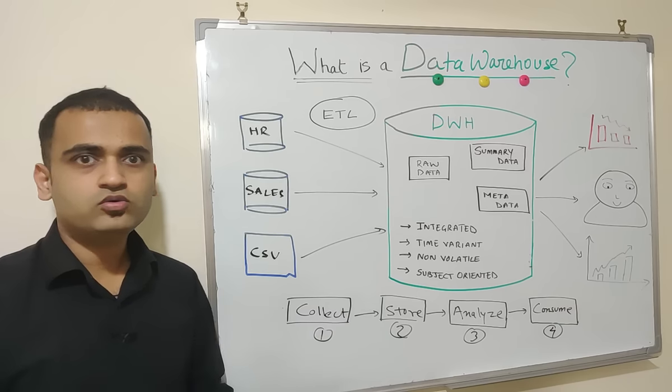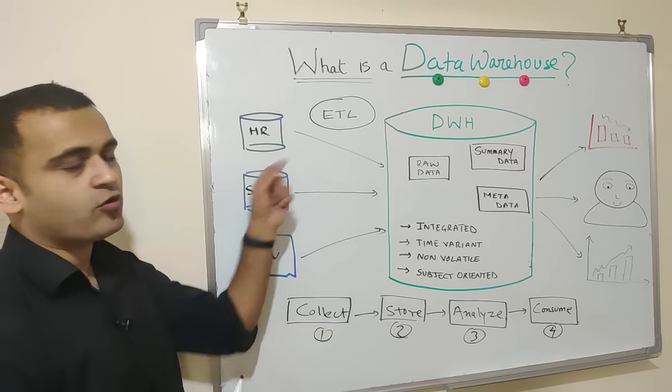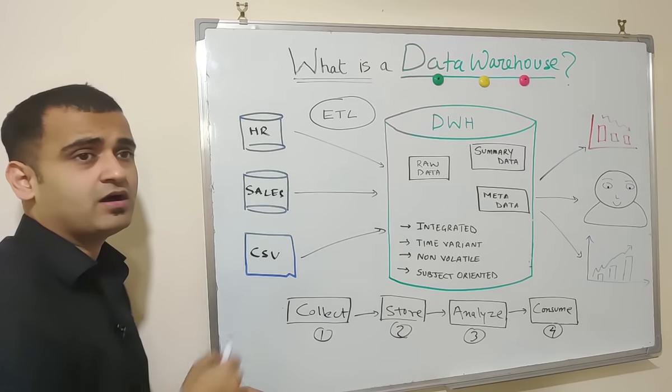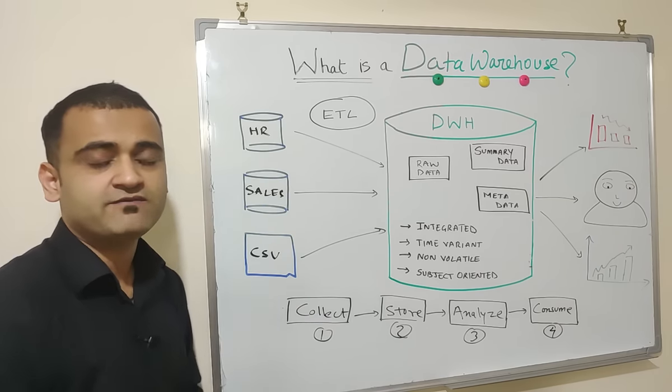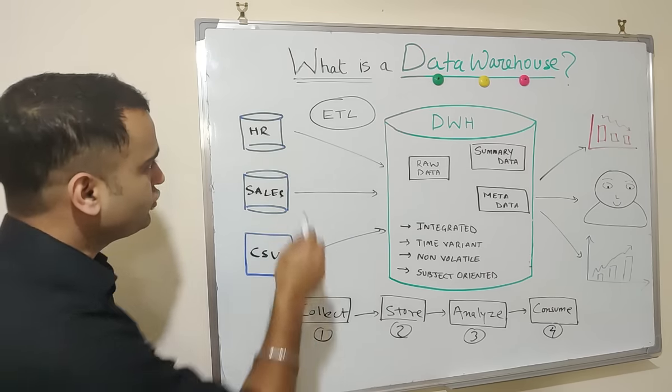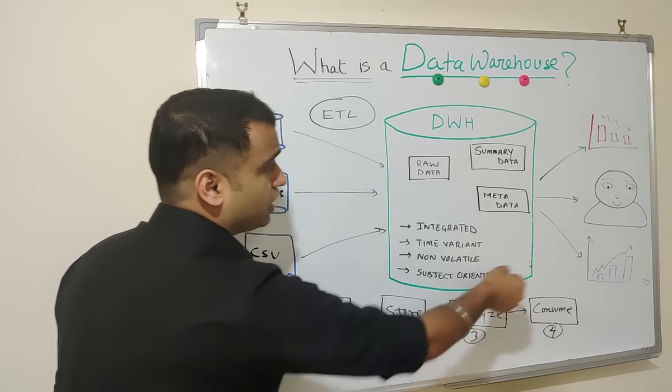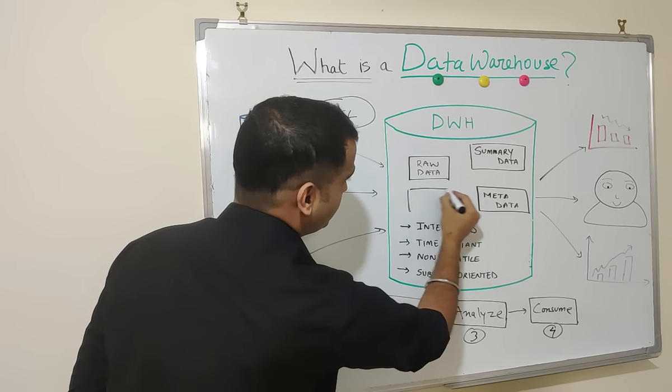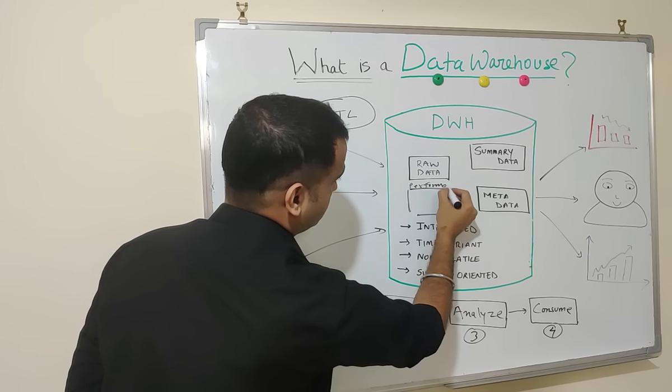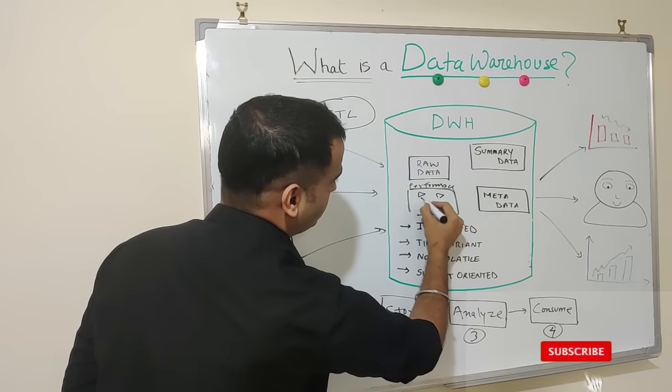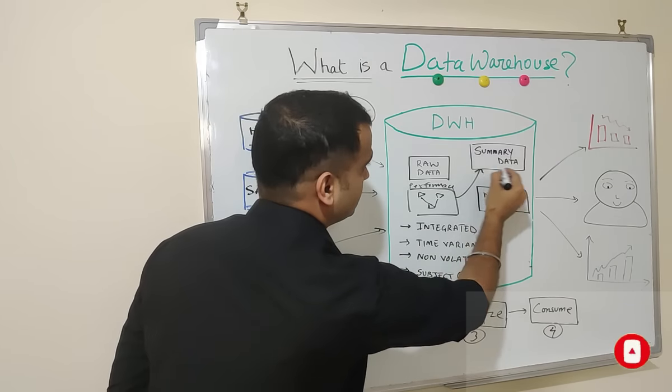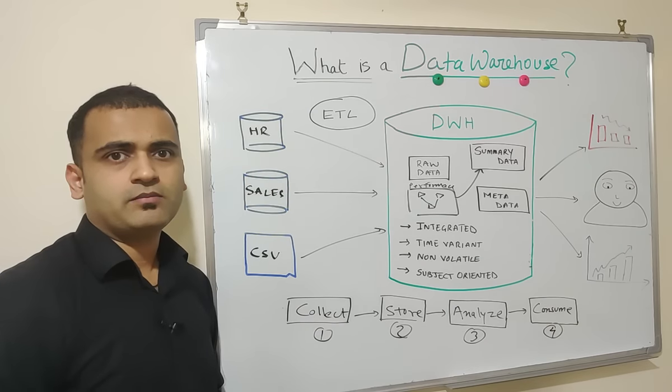So what you can do is you already have your HR system where you have all your employees data and then you have your sales transactional system where you have all the sales related information, including the sales generated by each and every employee. So you can bring these two data sets into a data warehouse and create a performance data set. And in this data set, you can combine all the disparate data coming from HR and sales to create a summary data which can be further distributed to the higher management.